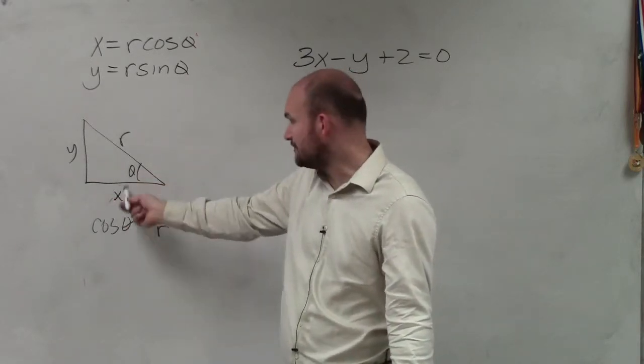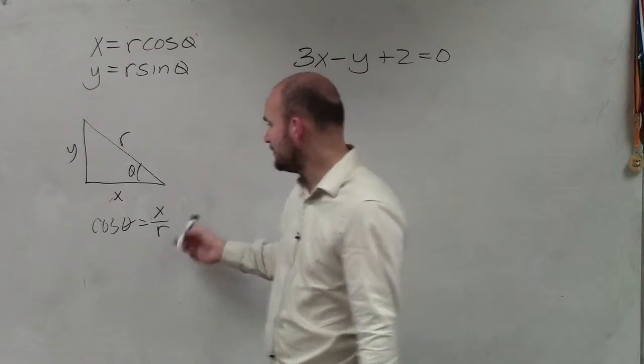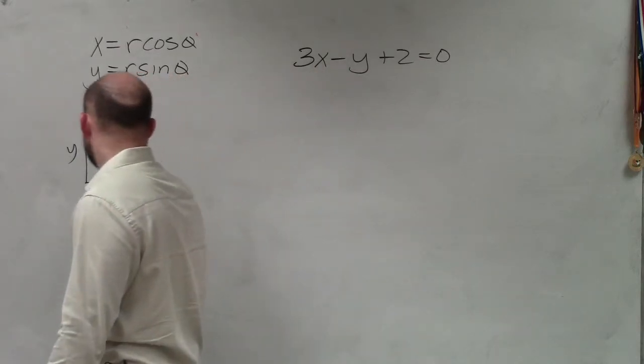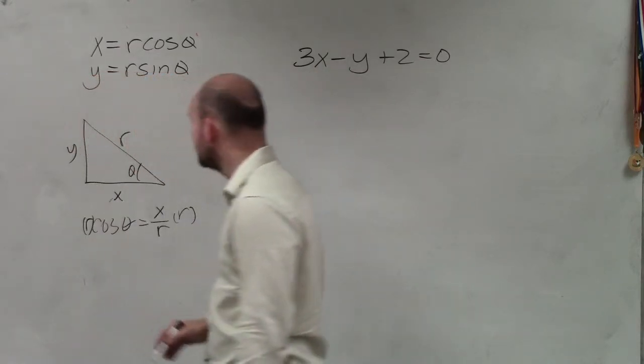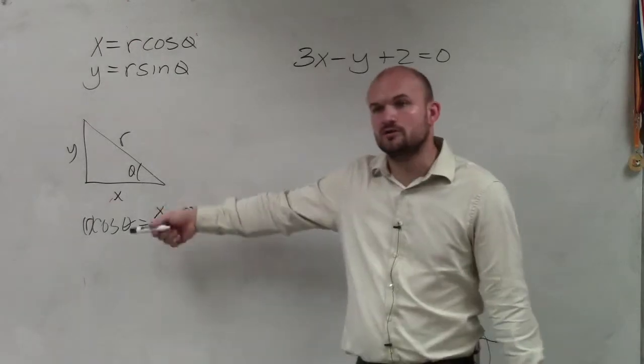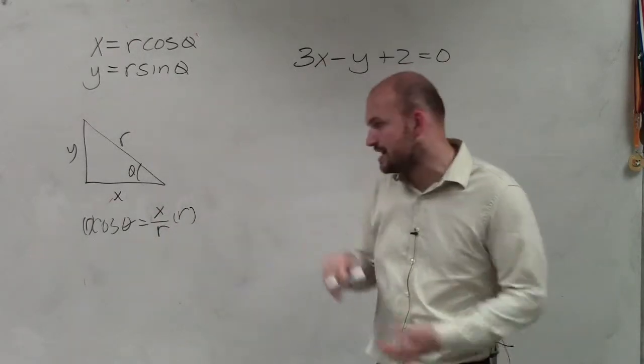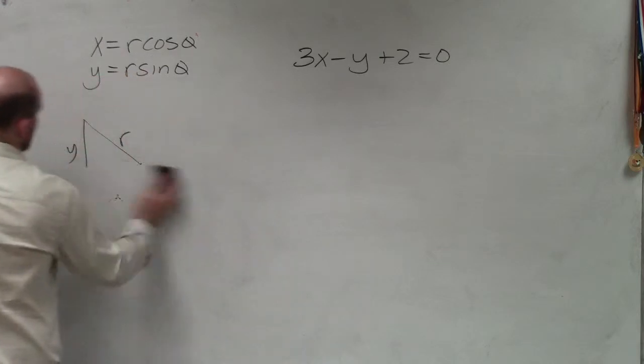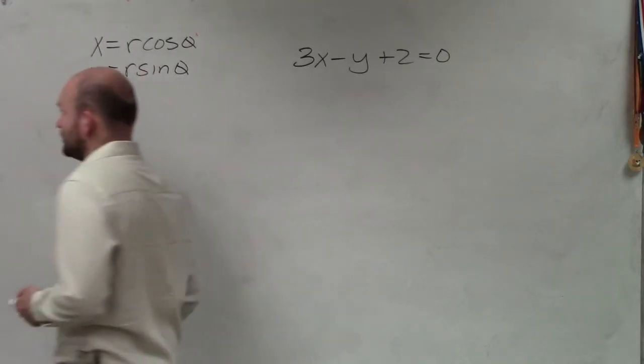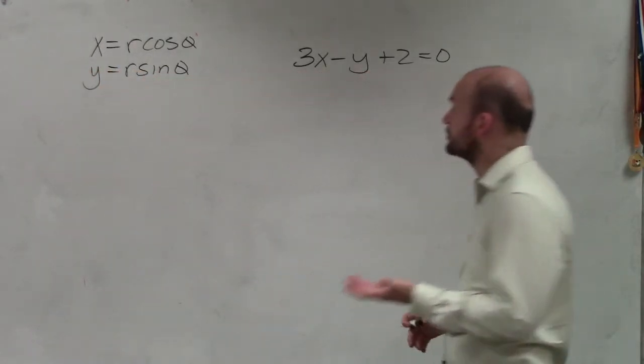The cosine of that angle is x over hypotenuse, and then you multiply by r. So x equals r cosine of theta, and you do the same thing for sine. Now that we know these two, and we're never going to forget them because they're essential when we're converting,